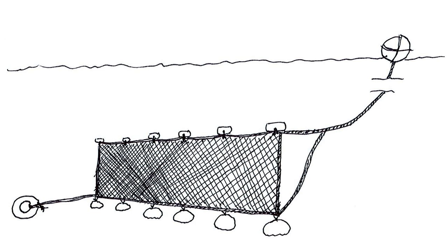These nets are made with a very thin light nylon rope, have a small mesh and are strung between two ropes, a top rope with floats and a bottom rope with weights.